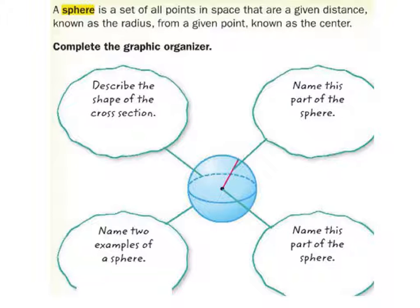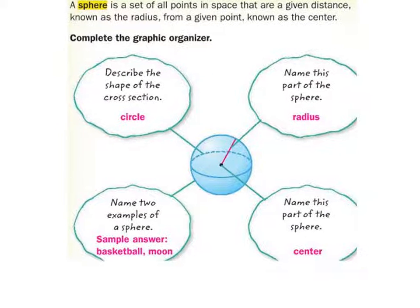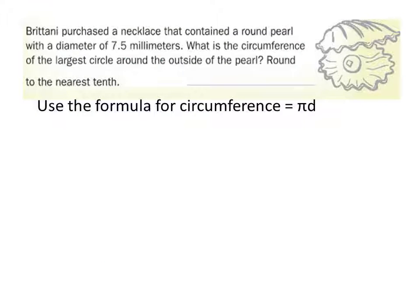Complete the graphic organizer. There you go. If you wanted these, it's fine. You have a circle, you have a radius, the center is good. Then it looks like a basketball or the moon or some other spherical object.